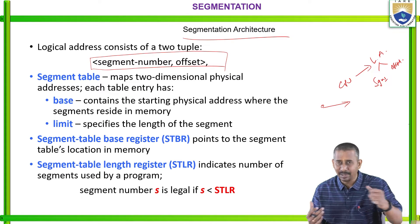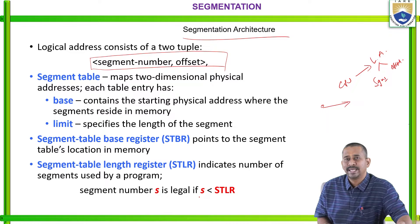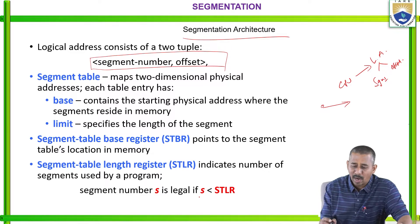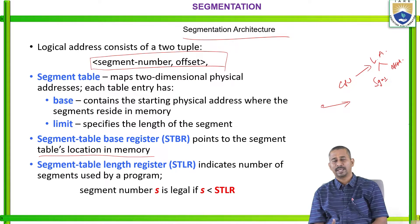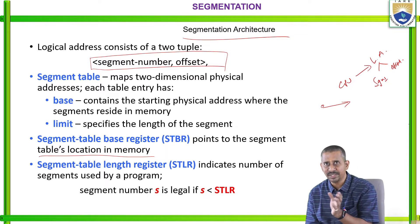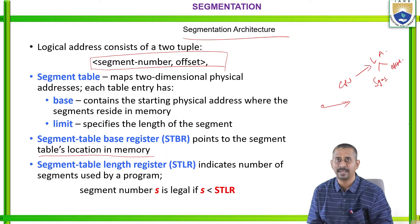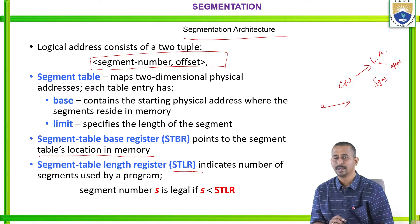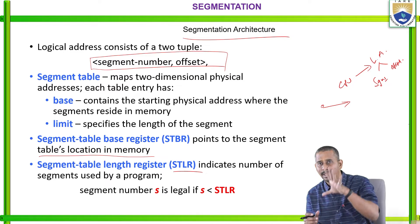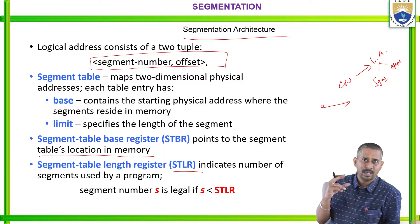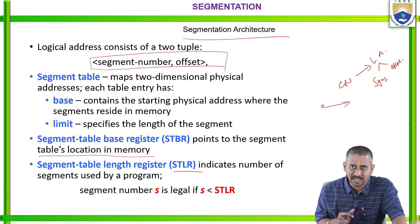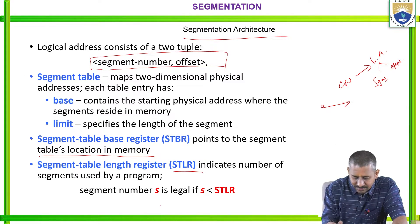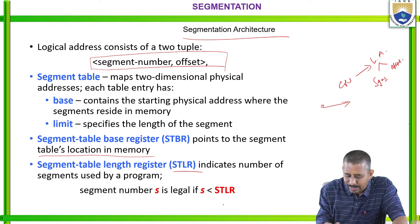We have the segment table base register (STBR), which points to the segment table's location in memory, and the segment table length register (STLR), which indicates the number of segments used by the program. A segment number is legal if it is less than the segment table length register.